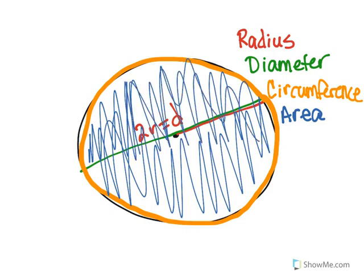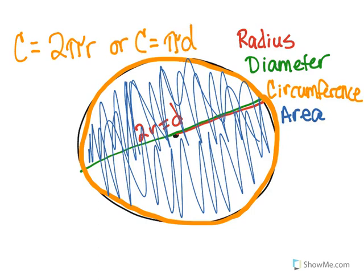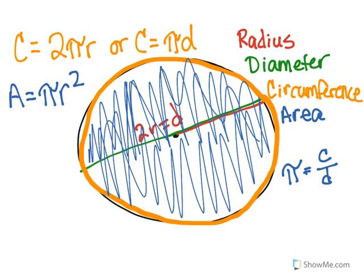So now we're going to solve some problems, but just real quick, let's remind ourselves of formulas. Circumference is equal to 2πr, or circumference is equal to π times diameter. And area is equal to πr². Remember, pi is the ratio of your circumference to your diameter — so pi equals your circumference divided by your diameter.